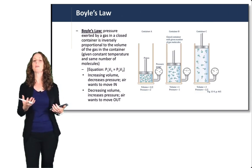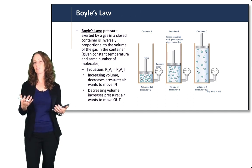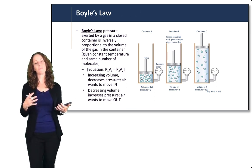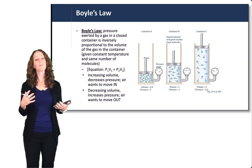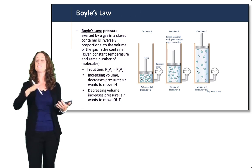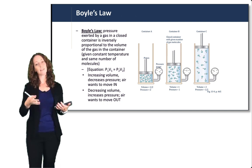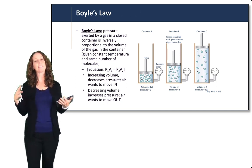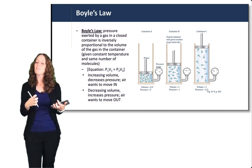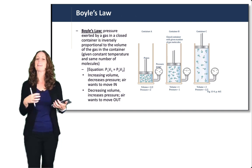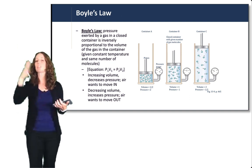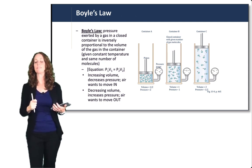This follows Boyle's Law, which states that the pressure exerted by a gas in a closed container is inversely proportional to the volume of gas in the container. As volume goes down, pressure goes up; as volume goes up, pressure goes down. This creates the high-to-low pressure gradients needed to move air. As we increase the volume of the thoracic cavity, pressure decreases and air moves in from outside. As we squeeze on the chest cavity and decrease its volume, pressure increases and air moves out. These pressure changes are essential for inspiration and expiration.